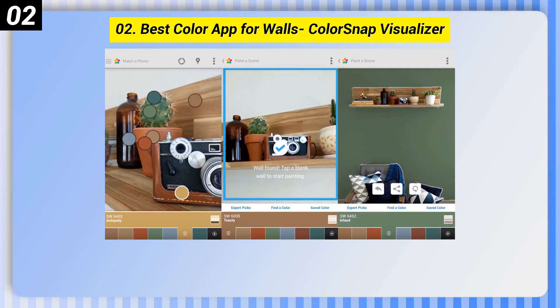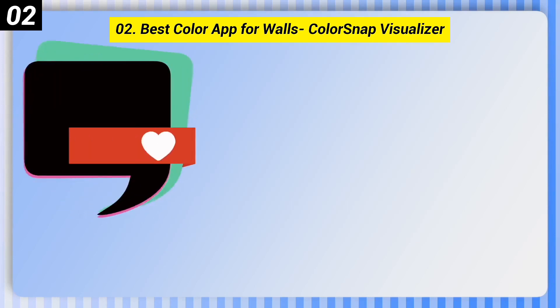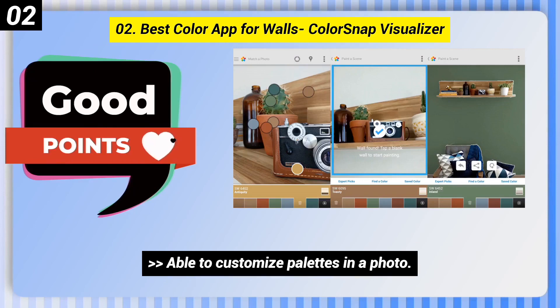Number 2: Best Color App for Walls — Color Snap Visualizer. Here are some good points of this one: Fast, real-time wall color swapping, and able to customize palettes in a photo.